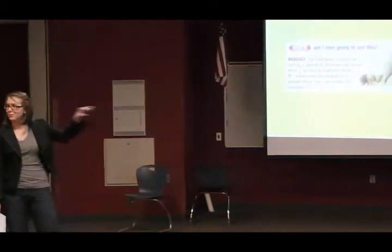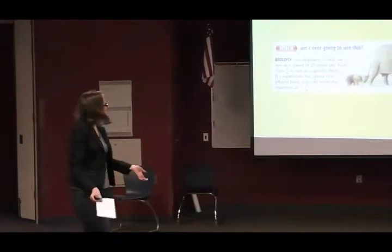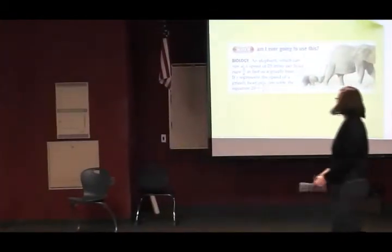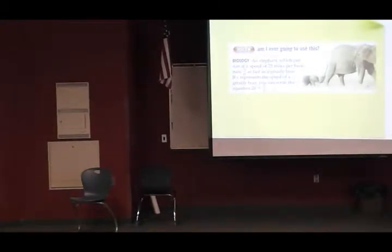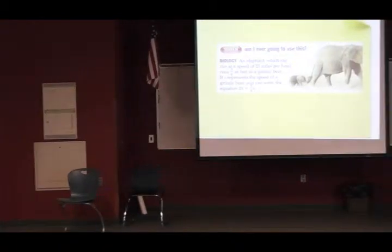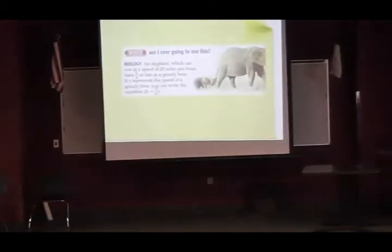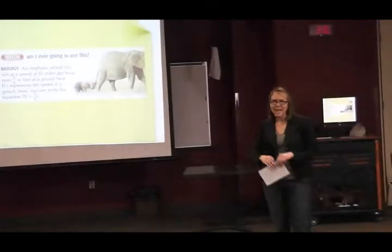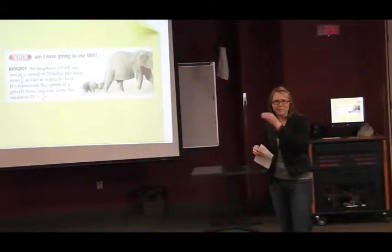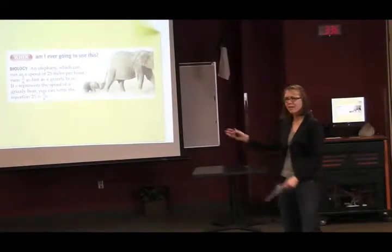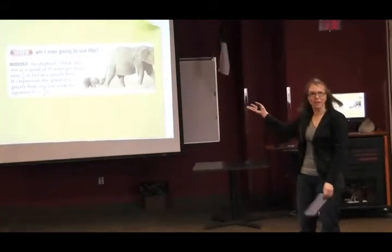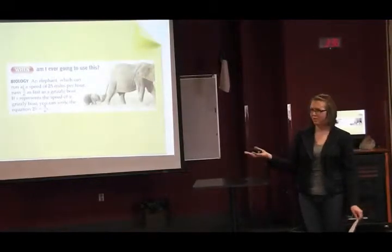Like this one, this is not our book, but this one even said, when am I going to use this? Well, if you're studying elephants and grizzly bears, and you know that an elephant runs at a speed of 25 miles per hour, and for some reason you're comparing that to the speed of a grizzly bear that you don't know, and yet you know that they're exactly related by 5 sixths, the fraction. Well then, yes, of course you would write a linear equation using a fraction. Of course, biologists do this all the time. Don't you guys know that?